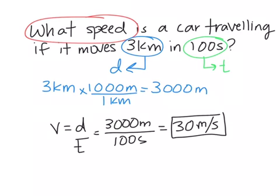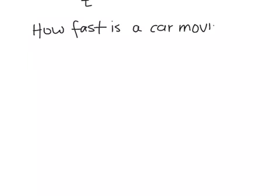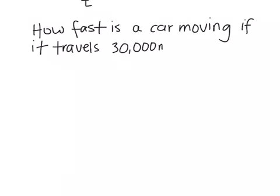And the last type of problem we're going to look at is where we are given again two different types of units. So in this example, how fast is a car moving if it travels 30,000 meters in 0.6 hours?